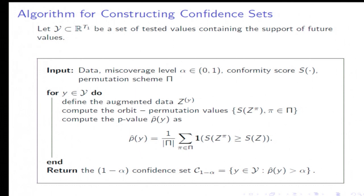Then you compute the p-value, which simply counts the fraction of the values that fall above the observed value of the statistic. And then at the end, you report the 1 minus alpha confidence set, which collects all the values of potential values of Y where the p-value is not too small.